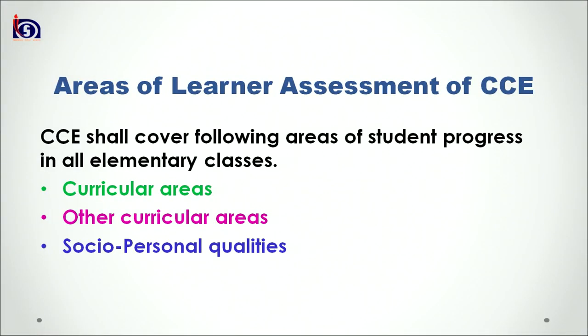Now, what are the areas of assessment under CCE? As stated, this is the main topic of this lesson. Under the scheme of Continuous and Comprehensive Evaluation, assessment in elementary classes is done in four core areas. The first area is curricular areas; the second is other curricular areas; and the third is socio-personal qualities, also abbreviated as SPQs. We will take each category one by one.